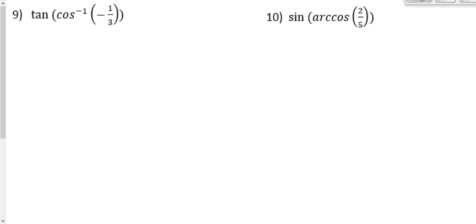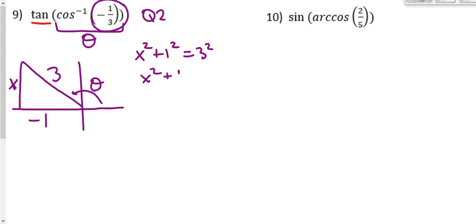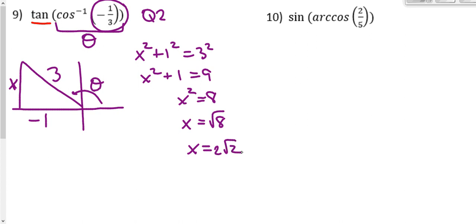Number 9, same idea. Start with the inside and call it theta. The value for cosine is negative, so we're in quadrant 2. Draw a reference triangle in quadrant 2: label the adjacent with negative 1 and the hypotenuse with 3. To find the tangent, we need the opposite side x. Using the Pythagorean theorem: x squared plus 1 squared equals 3 squared, so x squared equals 8, and x equals square root of 8, which simplifies to 2 square root 2. The tangent is opposite over adjacent: 2 square root 2 over negative 1, which is negative 2 square root 2.